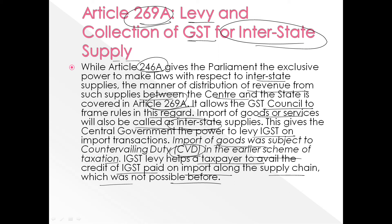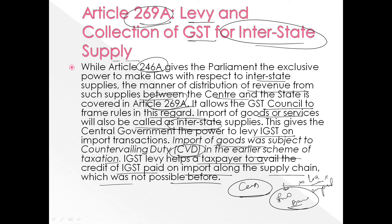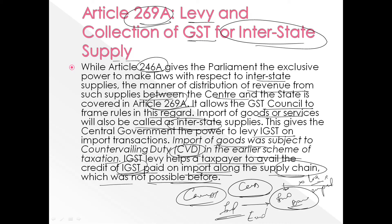A countervailing duty is levied on any import of products that are manufactured or can be manufactured in India, to avoid losses that would arise if those products were produced domestically and subjected to state taxation. With the scheme of IGST, it helps the taxpayer avail the credit of IGST paid on imports along with the supply chain, which was not possible before under the countervailing duty regime.